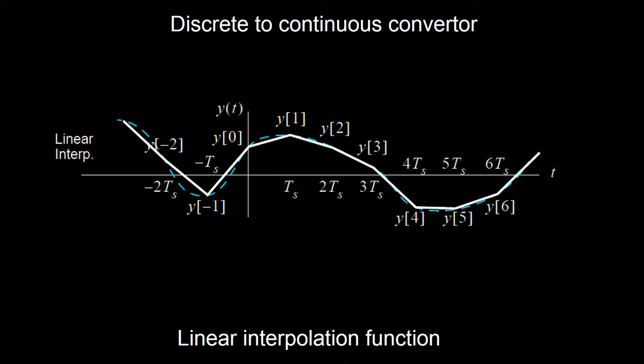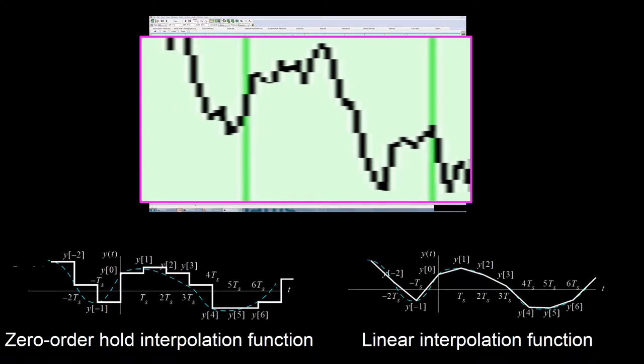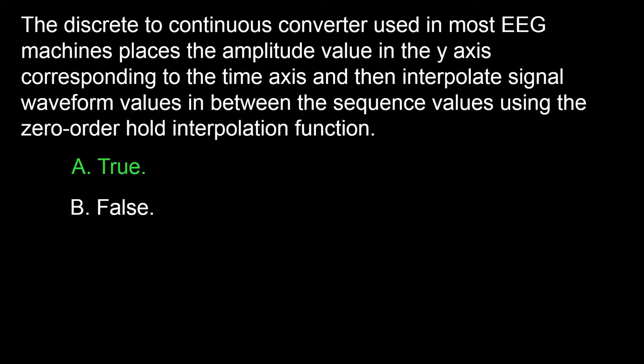The second method is called linear interpolation, which achieves continuity by sending addresses to the screen connecting a line between the sampled values, not as straight lines. Comparing the enlargement of the EEG segment to the two different methods of discrete-to-continuous converter representation, it is clear that the method used for EEG wave reconstruction is the zero-order hold interpolation function. So the answer to this question is true.